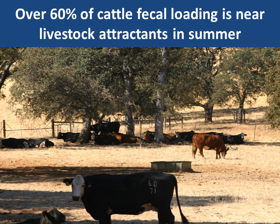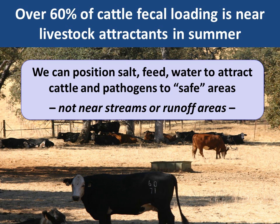If we think about where livestock manure is distributed — because most of these pathogens are fecal-borne — we find in California, particularly during the dry season, that about 60 percent of cattle fecal loading is near livestock attractants in summer: a water tank, shade, those types of areas. So using these attractants to pull animals away from streams or areas where we get significant runoff, we can use salt, feed, water, or shade if we don't have it naturally — to attract cattle and thus their pathogens away from these vulnerable areas. And we can do that very effectively.